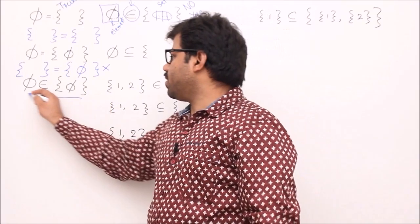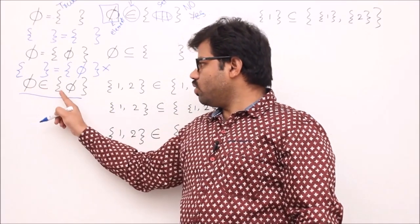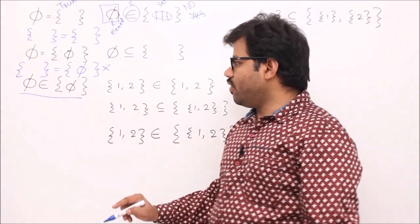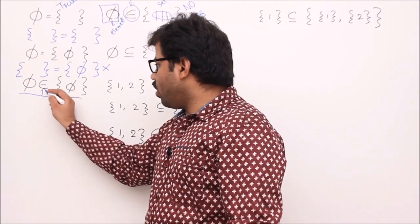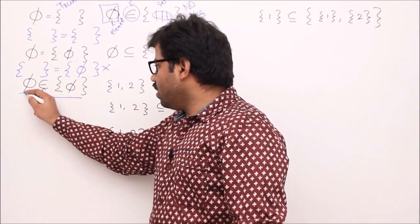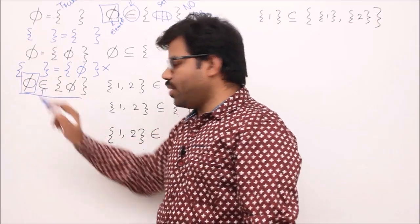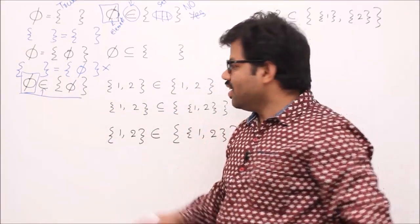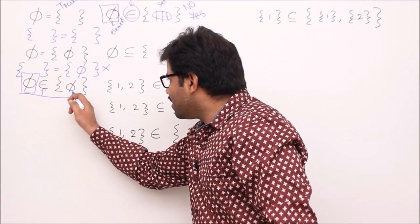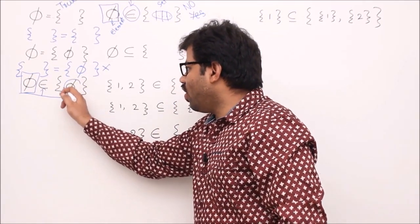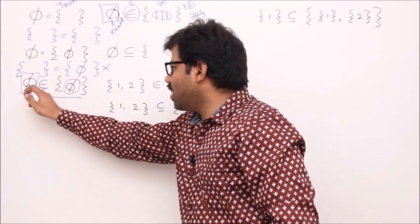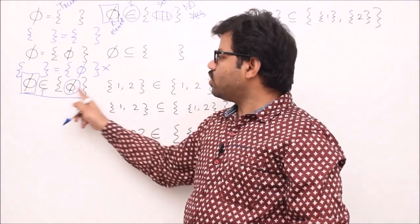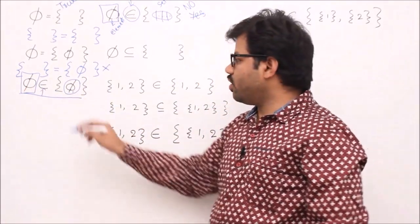Now: does empty set belong to {∅}? Whenever there is a 'belongs to' operator, treat the entire left side as an element and search for it on the right side. I am searching for the empty set as an element. I found it — the empty set is present here as an element. So empty set belongs to {∅} is absolutely true.